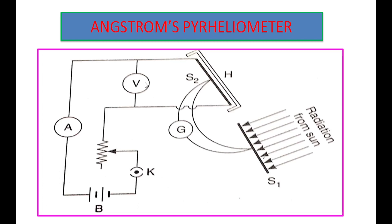The strip S2 is connected to an electric circuit consisting of a voltmeter, an ammeter, a rheostat, a battery, and a plug key. The electric circuit can be connected to S1 or S2 as required. This completes the construction of the experiment.